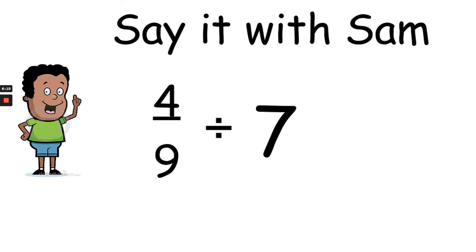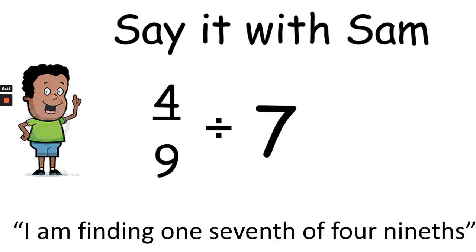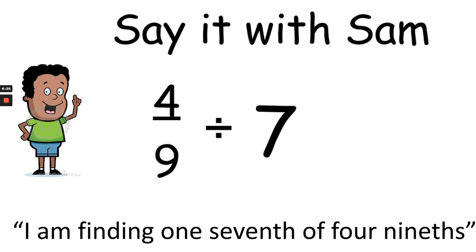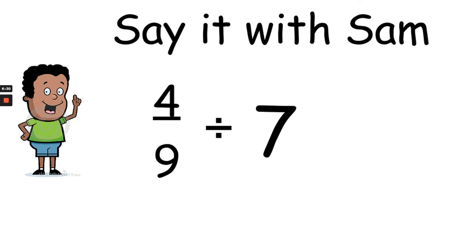Alright we're on to say it with Sam. Sam's dividing by 7. He's finding 1 seventh. I am finding 1 seventh of 4 ninths. Say it. I am finding 1 seventh of 4 ninths. Say it again. Alright pause your video. Write down the equation first and solve it.